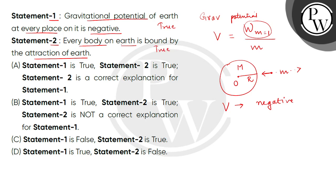And Statement 2 provides the reason why the gravitational potential is negative. So the correct answer is option A.